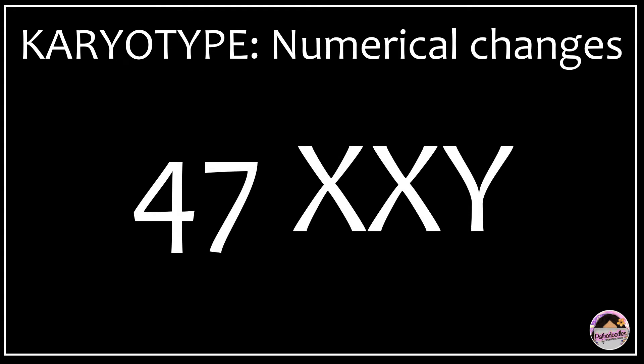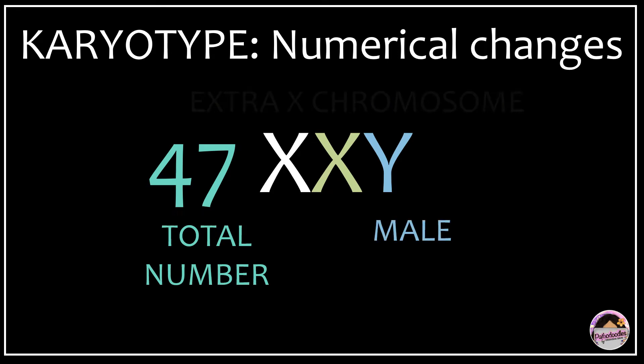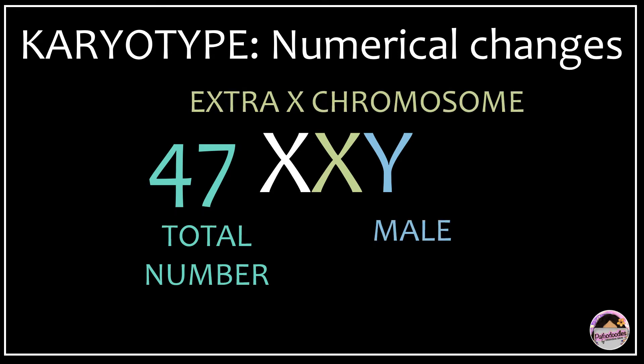Let's try another one: 47,XXY. What does this nomenclature tell you? It tells you that the total number of chromosomes is 47 — one extra. It's a male patient with a Y chromosome, but there's clearly an extra chromosome — the extra X chromosome. The diagnosis is Klinefelter syndrome.